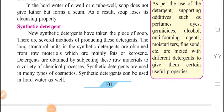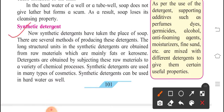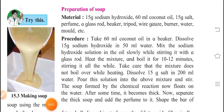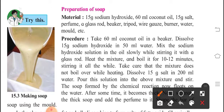Next is synthetic detergent. Now synthetic detergents have taken the place of soap. There are several methods of producing these detergents. The long structural unit in these synthetic detergents are obtained from raw materials which are mainly fats or kerosene. Detergents are obtained by subjecting these raw materials to a variety of chemical processes. Synthetic detergents are used in many types of cosmetics. Synthetic detergents can be used in hard water as well.